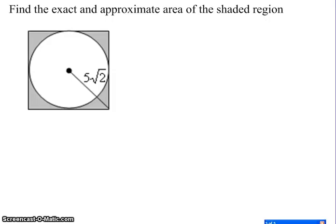Hi, this video is called Find the Exact and Approximate Area of the Shaded Region 2. If you take a look at this picture, you can see a square, you can see a circle, and the circle is inside of the square.